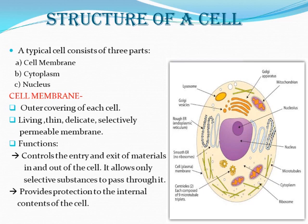You can see a diagram alongside. The typical cell consists of three parts. The first is the cell membrane — the outer covering of the cell. The outer lining is known as the cell membrane, which is also called the plasma membrane. These are synonymous terms.